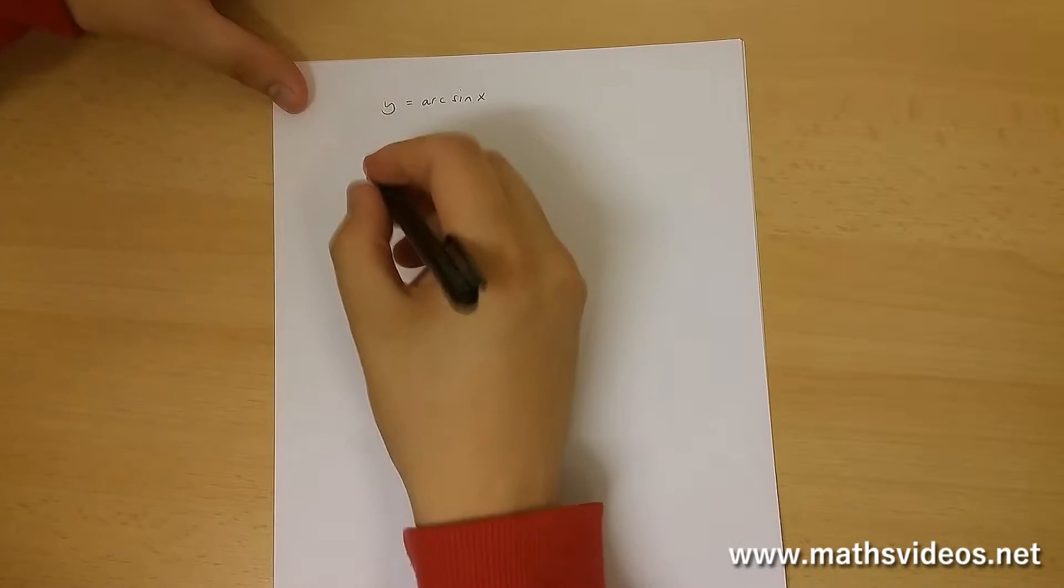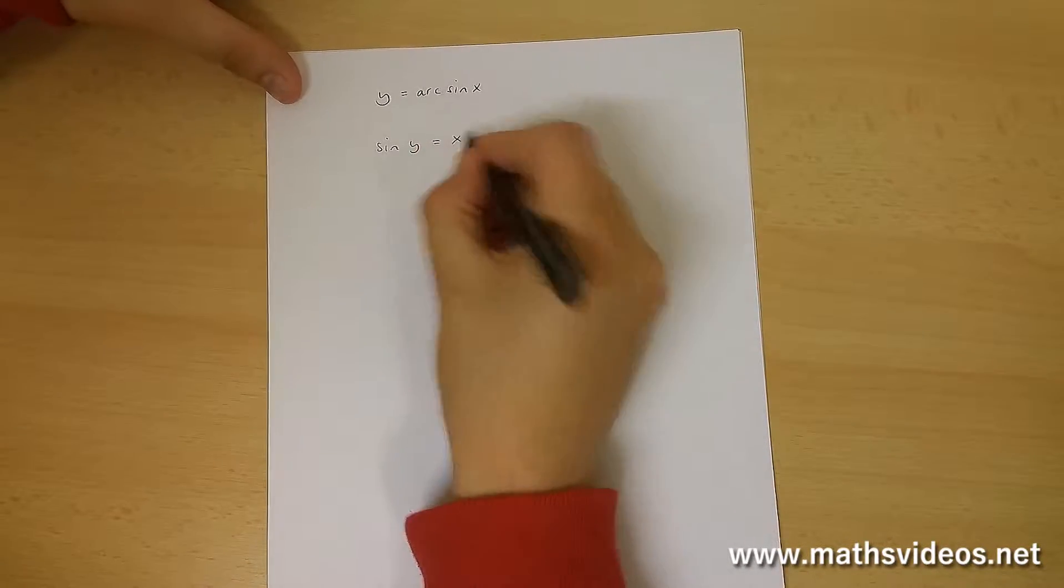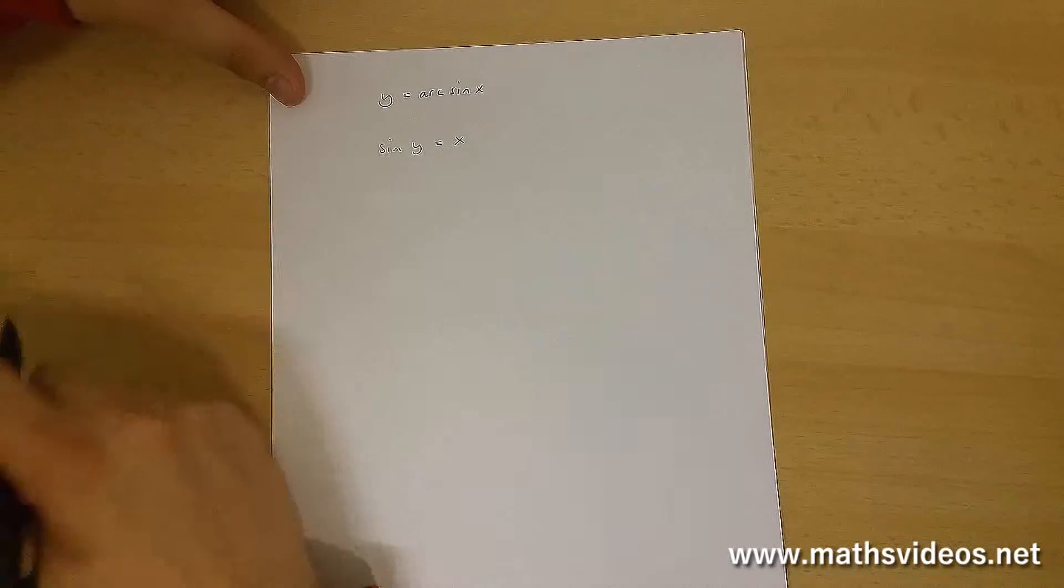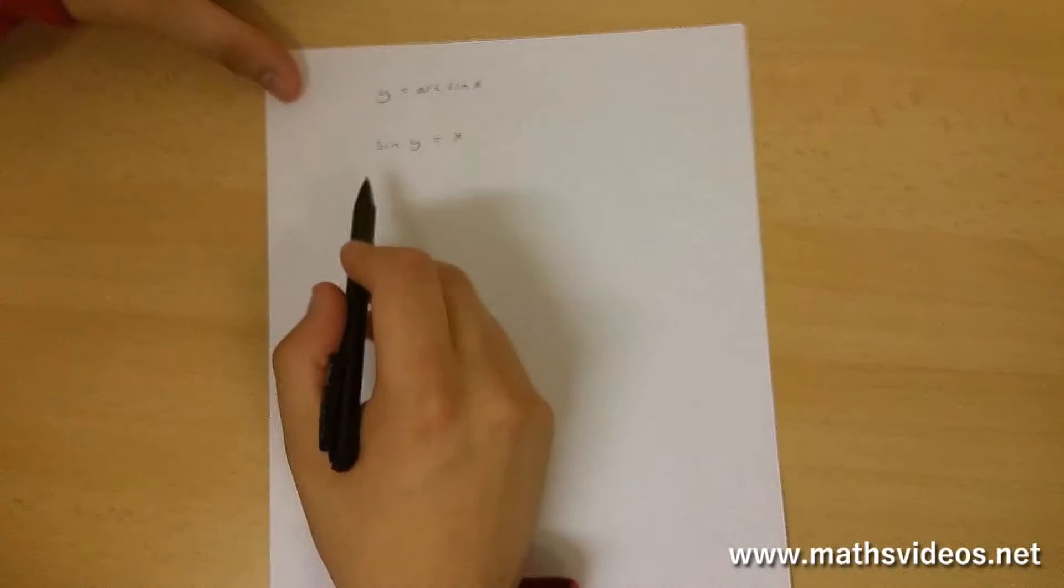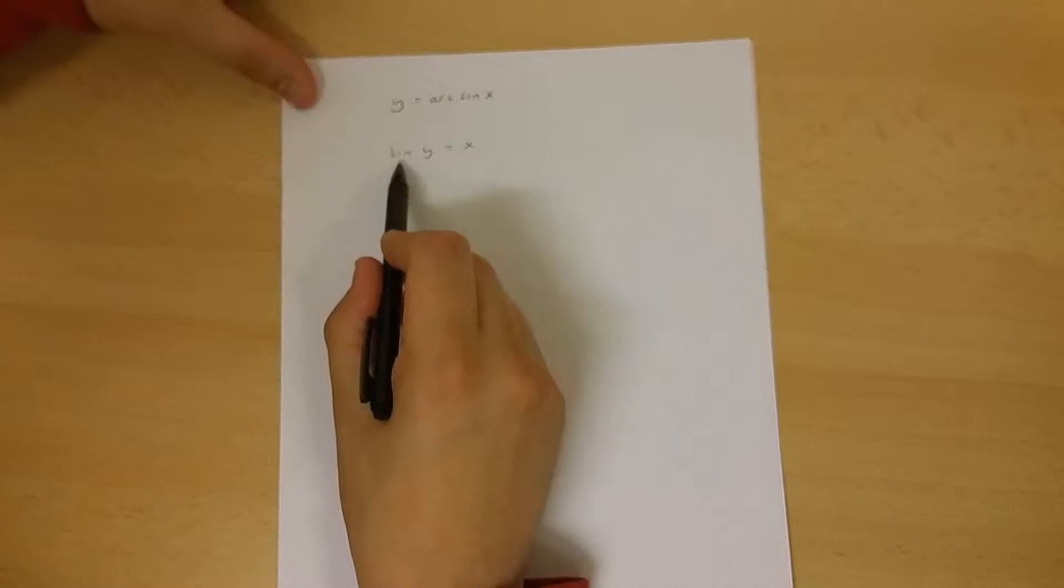Now we must first write sin(y) equals x, and we're going to use implicit differentiation to differentiate this side of the equation.